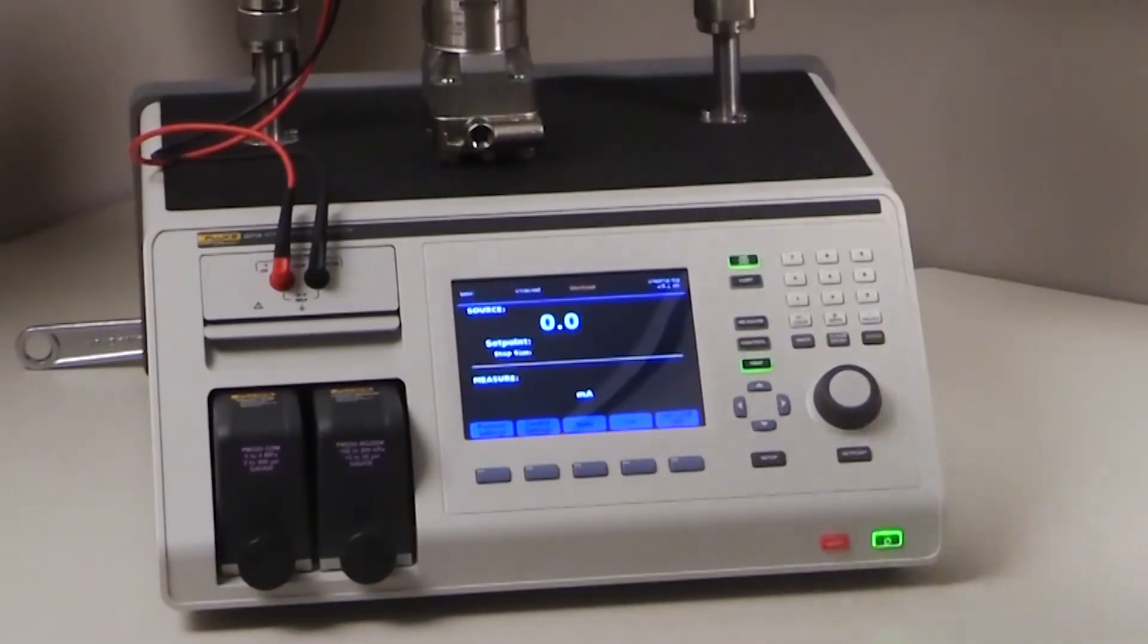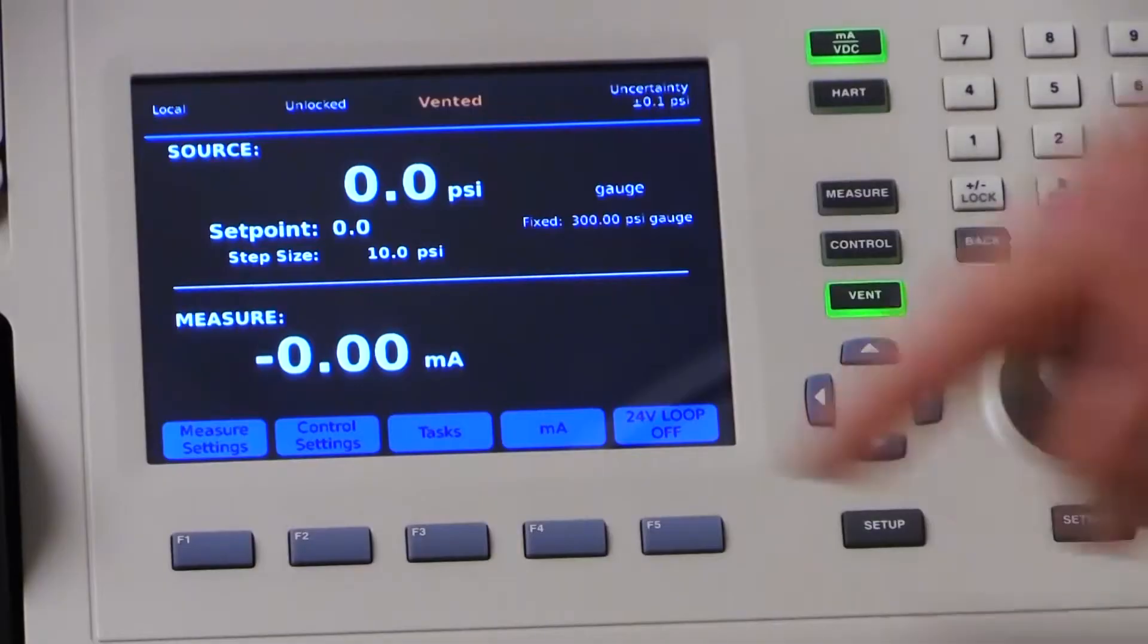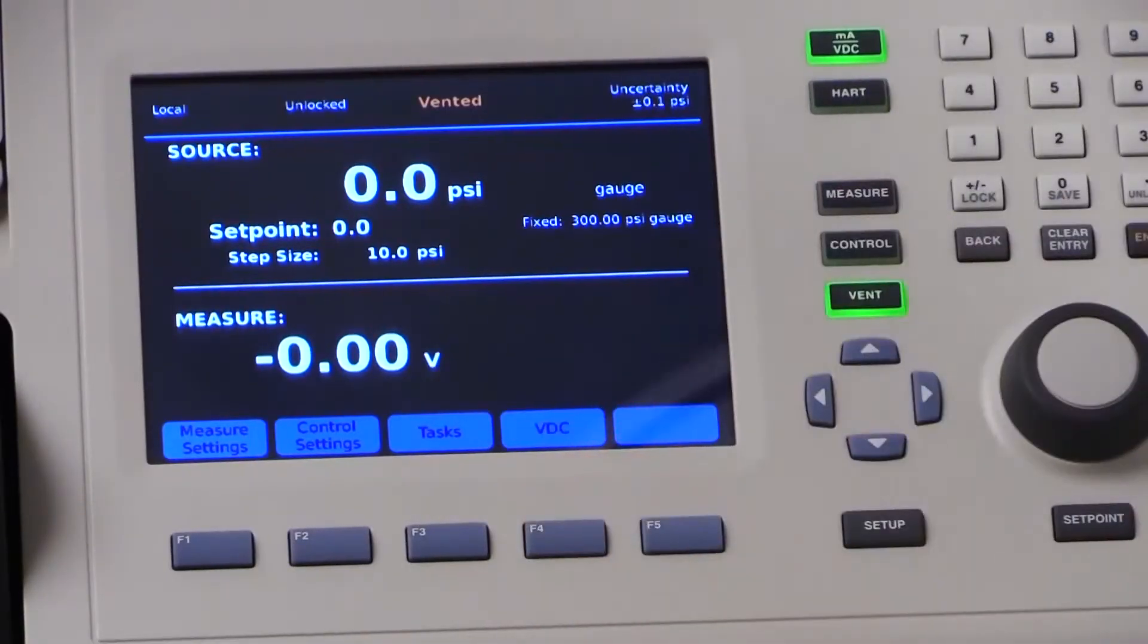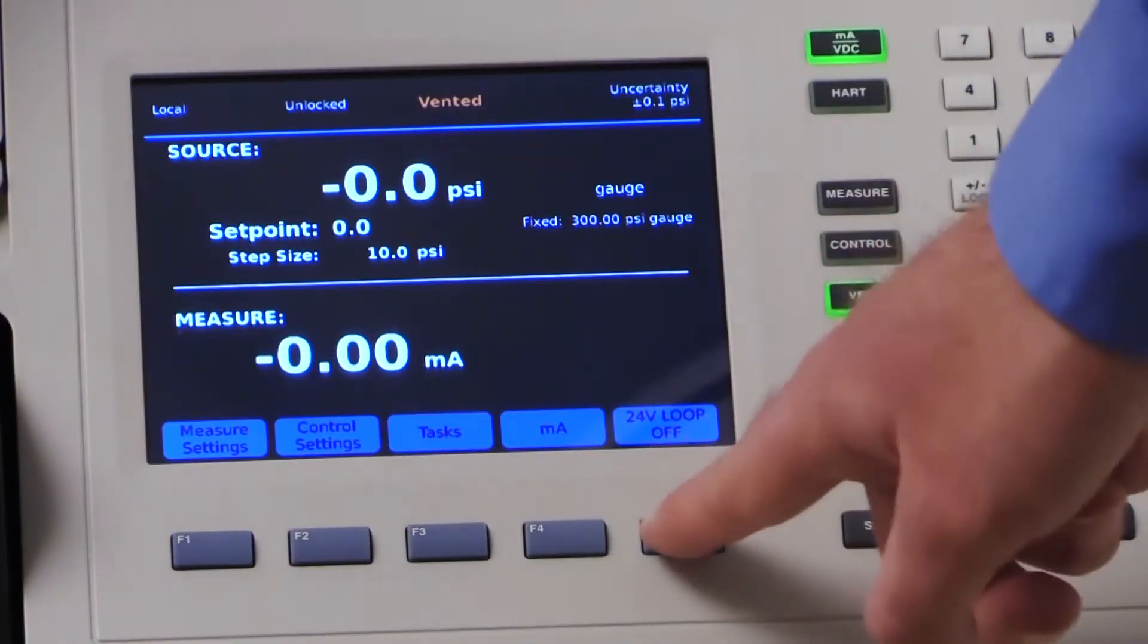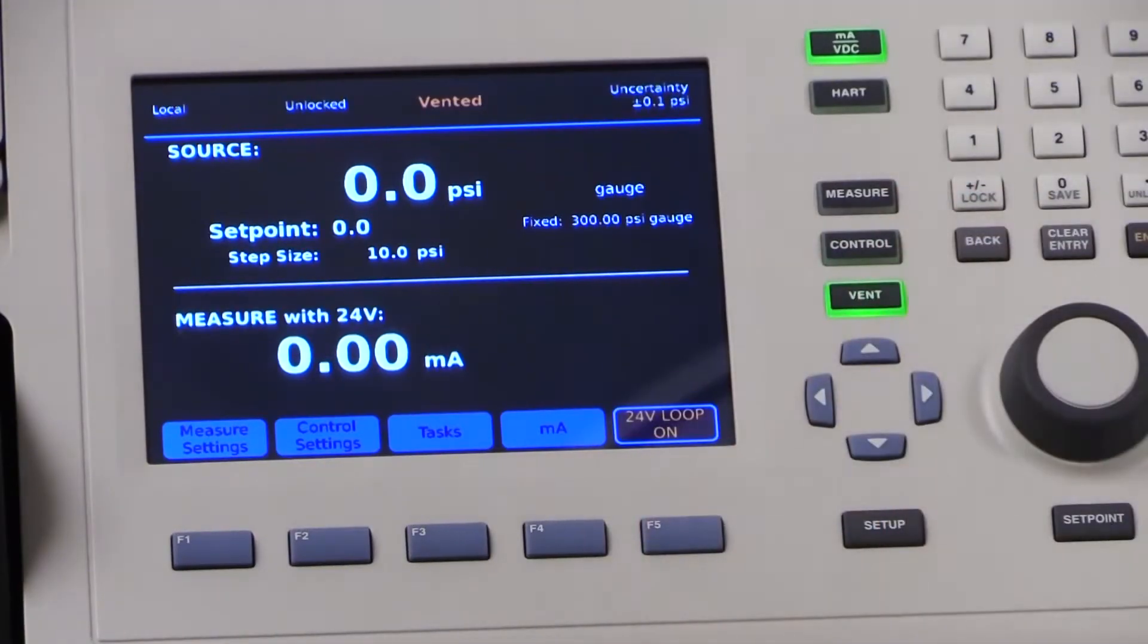To use the EMM, connect the device under test and press the mA VDC button. You can then select between measuring current and voltage, and toggle the 24-volt loop power on and off.